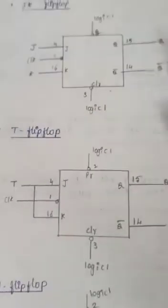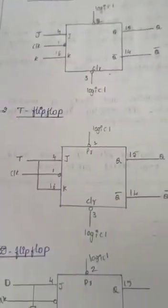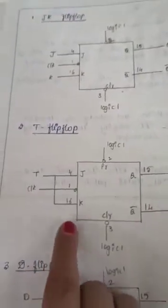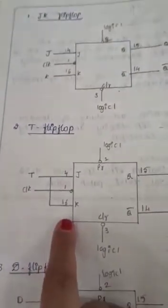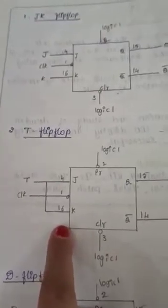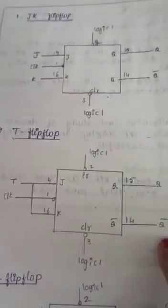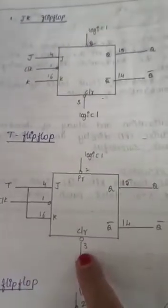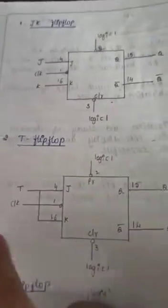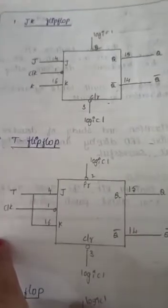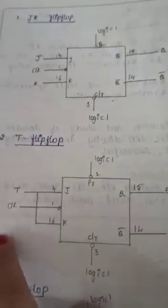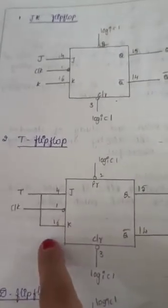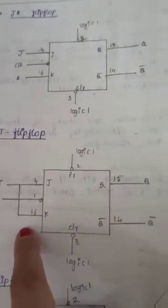Now coming to the T flip-flop: if you short both pins 4 and 16, you will get the T flip-flop. Using the same JK flip-flop IC 7476, you can realize a T flip-flop by shorting pins 4 and 16.